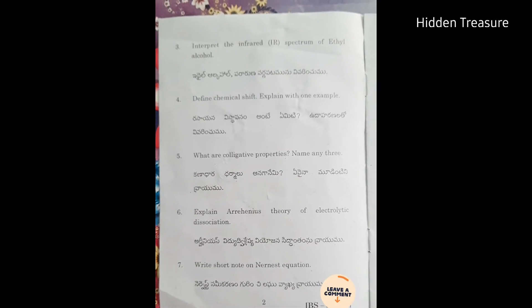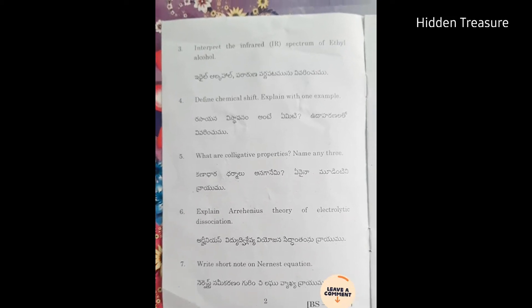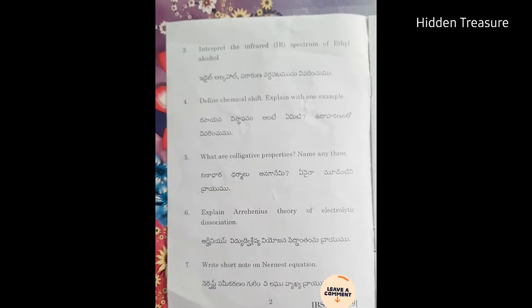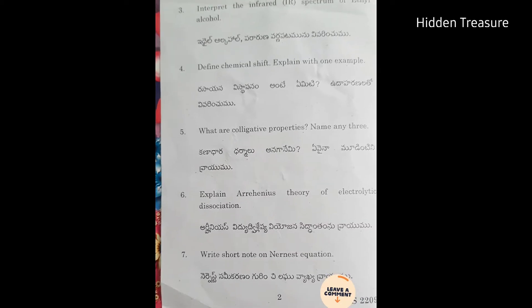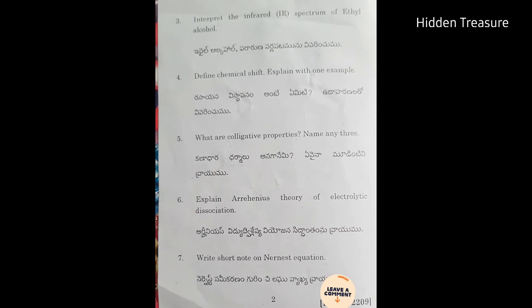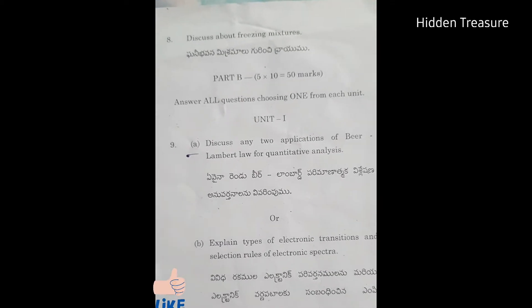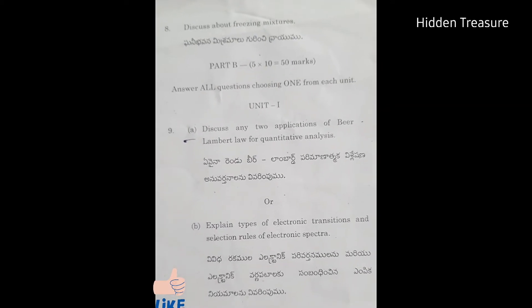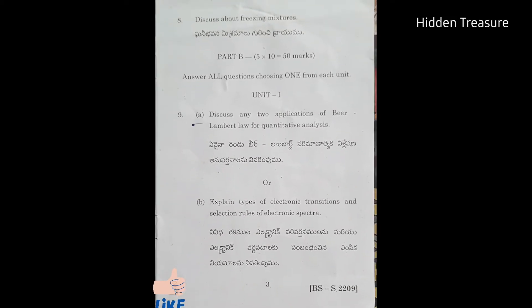Fifth question, what are colligative properties — name any three. Sixth, explain Arrhenius theory of electrolytic dissociation. Seventh question, write a short note on Nernst equation. Eighth question, discuss about freezing mixtures. These are the eight questions in Part A — answer any five.